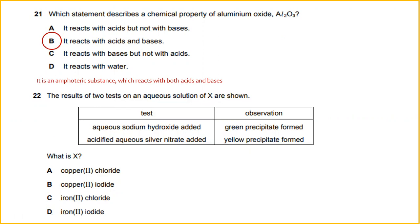The results of two tests on an aqueous solution of X are shown. What is X? When tested with aqueous sodium hydroxide added, a green precipitate forms. And when this solution of X reacts with acidified aqueous silver nitrate, a yellow precipitate forms. So X will be iron(II) iodide.